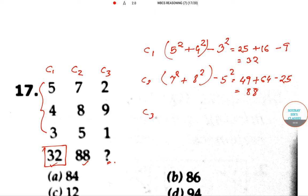In the same logic, for column 3, we can find 2² + 9² - 1². That means 2² is 4 plus 9² is 81 minus 1, so the answer is 84.